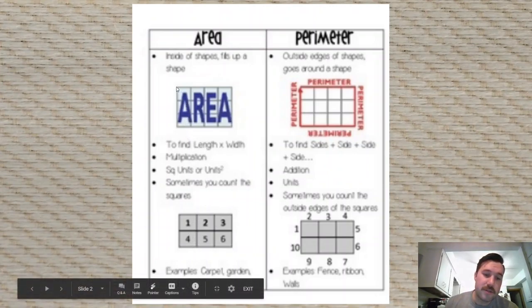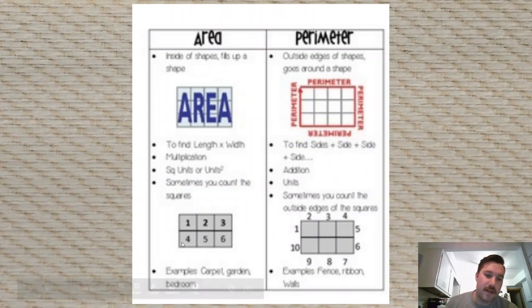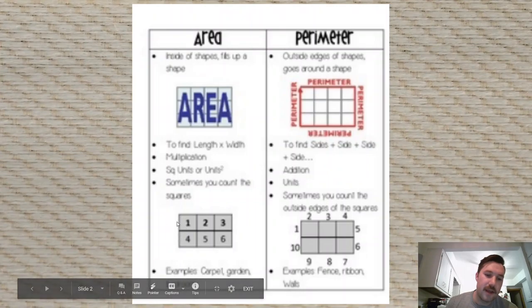Or you could multiply the length times the width. So here the length is 1, 2 squares. And the width is 1, 2, 3 squares. So 3 times 2 is 6. So the area here would be 6 square units.